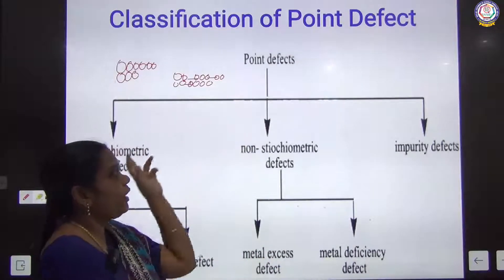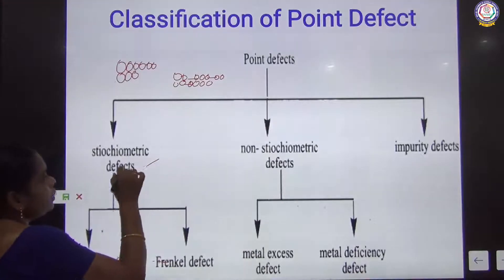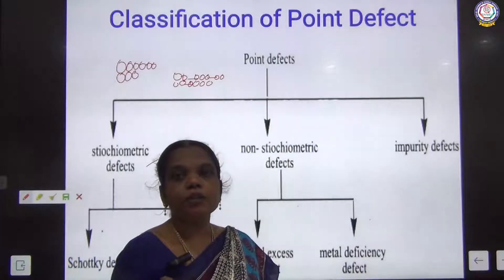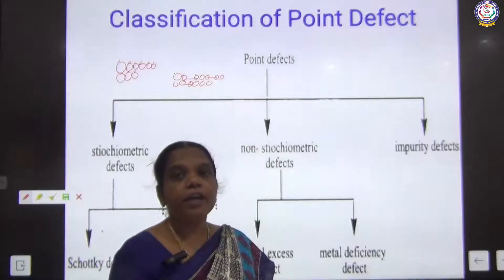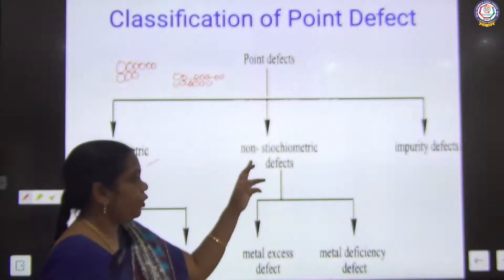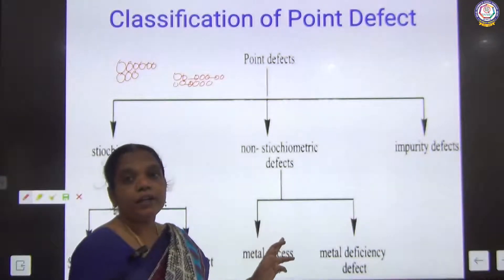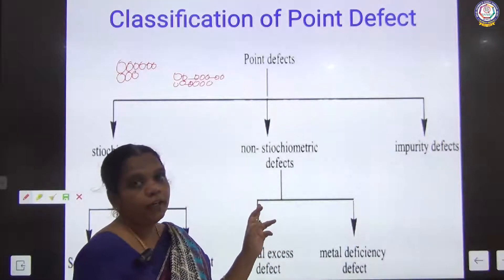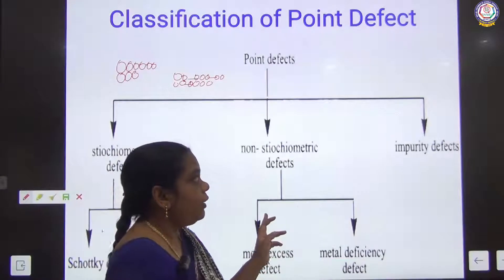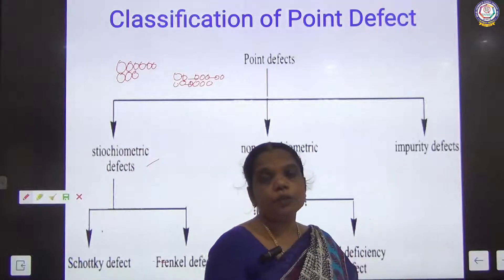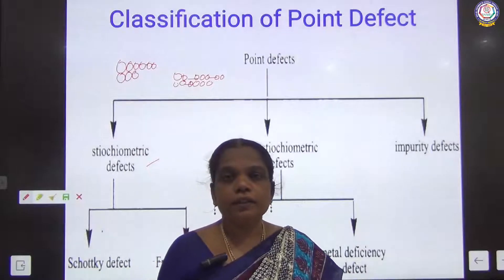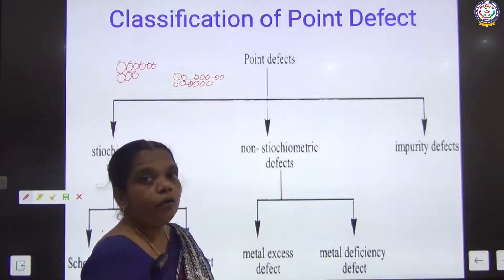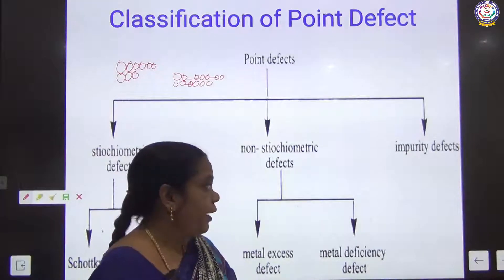The point defect can be classified as stoichiometric — meaning the number of atoms or molecules present in the crystal may vary due to the defect — and non-stoichiometric, where there is no variation in the number of atoms or molecules present in the crystal due to the defect. And then there are impurity defects, where due to the presence of impurity the crystal can show some defects.